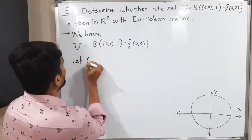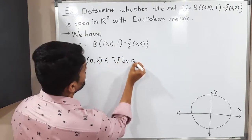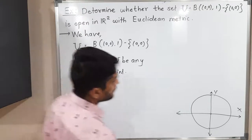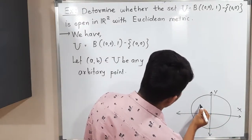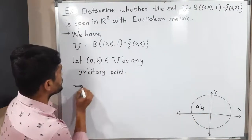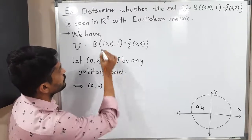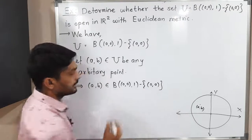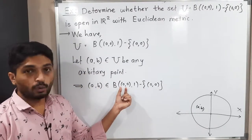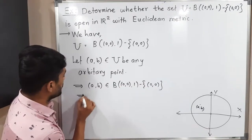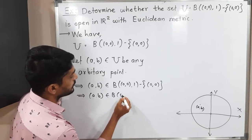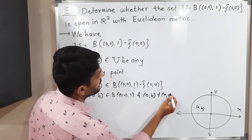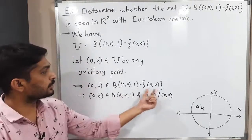Let us take one arbitrary point. Let (A, B) belong to U be any arbitrary point. So let me show it here — suppose this is point (A, B) I am taking. This belongs to U, that means (A, B) belongs to the open ball with center (0,0) and radius 1, minus the singleton {(0,0)}. That means our point (A, B) lies in this ball but is not equal to that point (0,0), since (0,0) is removed from that ball.